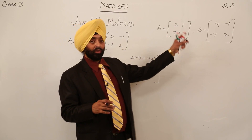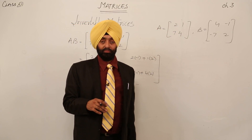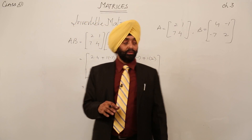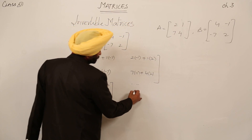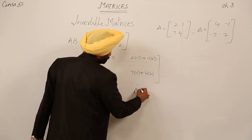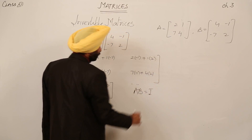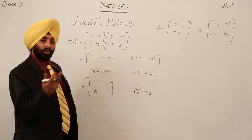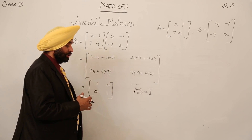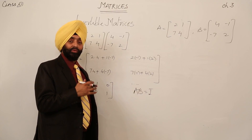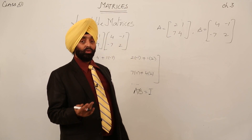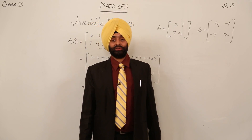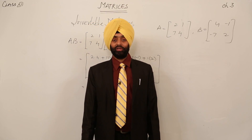So A times B gives the identity matrix I. This means A and B are invertible — A is invertible with respect to B. We got A times B equal to I, so B is equal to A inverse, or A is equal to B inverse. This is a very nice definition and explanation.